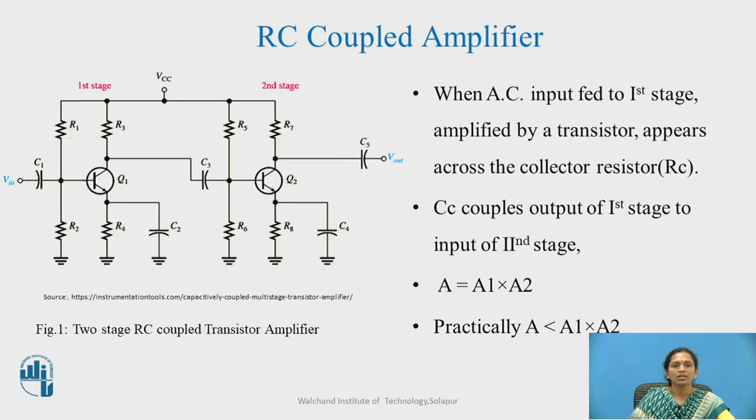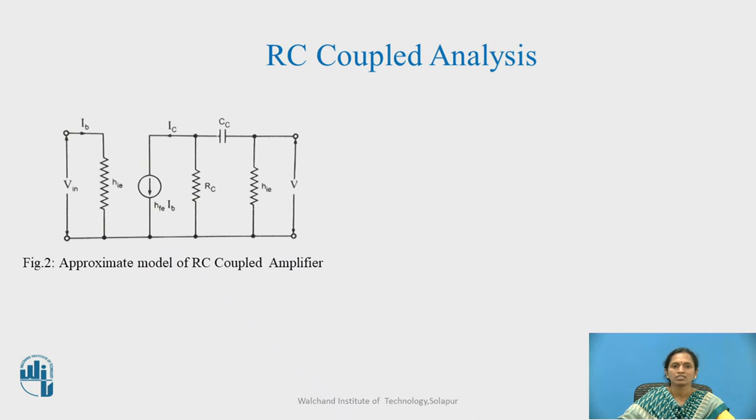This is the circuit. We can represent this circuit in the simplest form for the analysis purpose and that we can do with the help of the H model. H parameter is used to represent this transistor. Here this is the coupling capacitor in between the two stages. This is the input impedance of the second stage and this is RC which is the output impedance of the first stage.